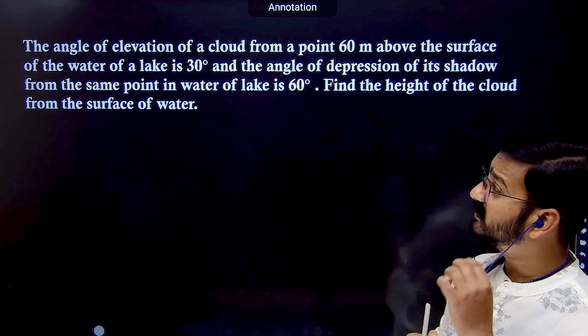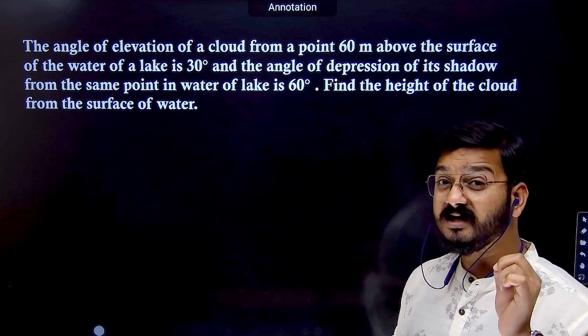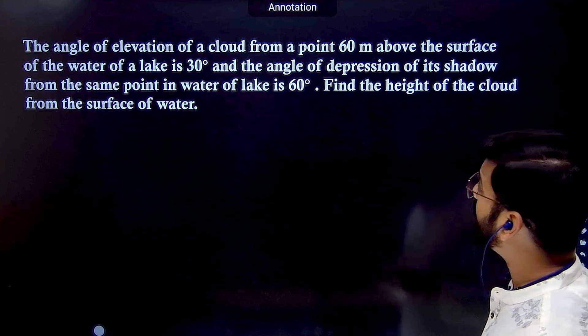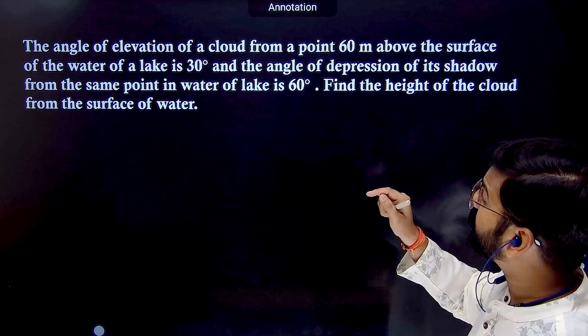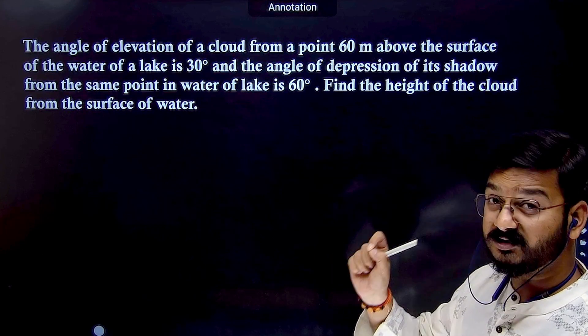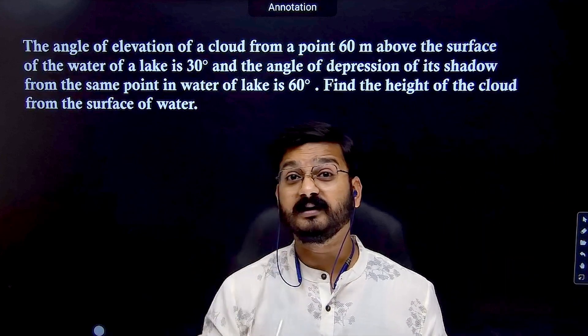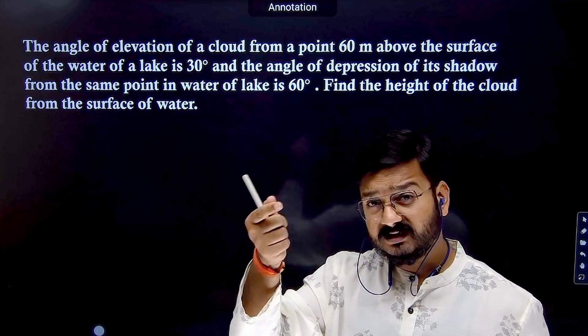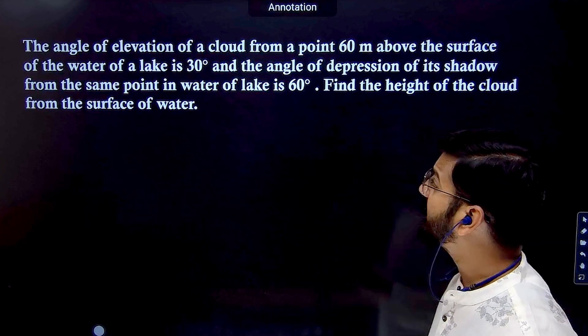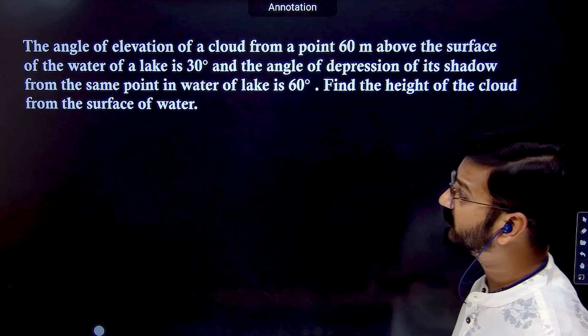The question is: the angle of elevation of a cloud from a point 60 meters above the surface of the lake is 30°, and the angle of depression of its reflection is 60°. The 60° is the angle of depression because you are seeing the reflection below. Find the height of the cloud from the surface of the water. Let's draw the figure first, then solve it using trigonometric ratios.